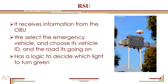The RSU receives information from the OBU and decides if there is an emergency vehicle in the intersection. If there is, the program switches that light to green and all others to red. We save the emergency vehicle's ID and follow its route to check whether it has left the intersection or is still in it. If another vehicle is detected in front of the emergency vehicle, the RSU tells that vehicle to go faster and move out of the way.